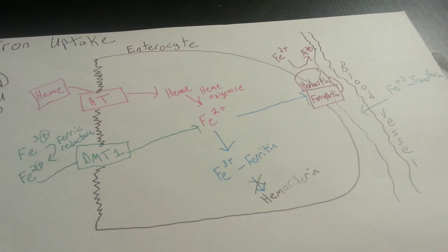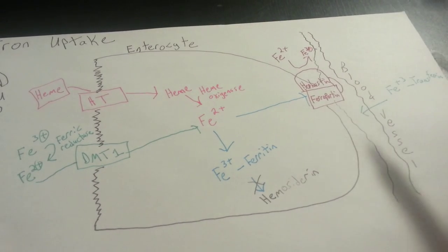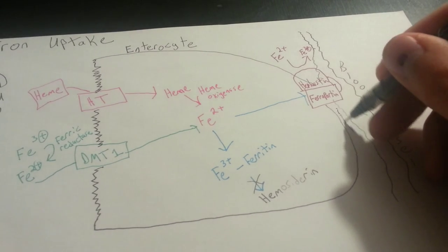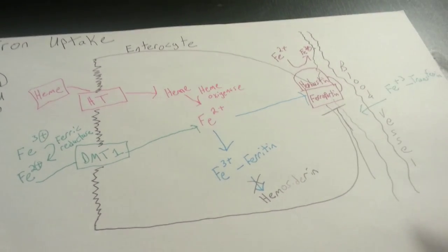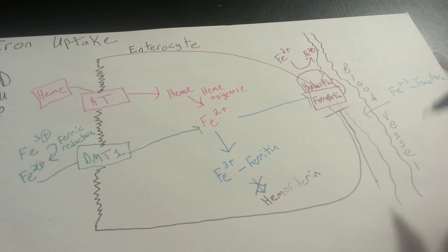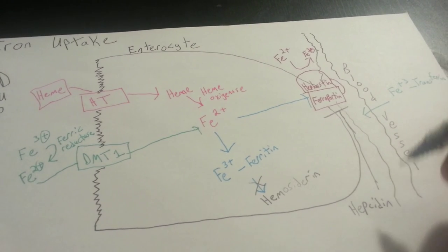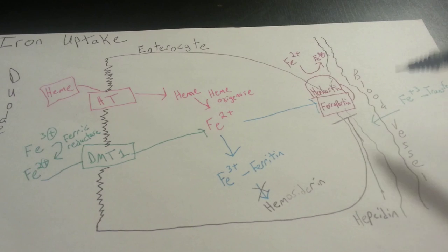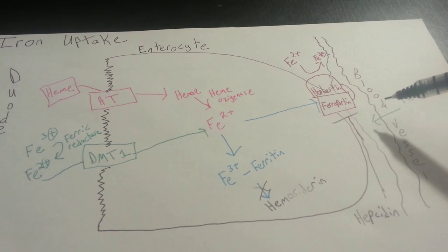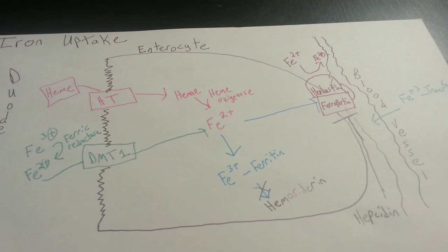And it's also important to note that we have some amount of control, not just over the storage into ferritin to keep it from going into the blood vessel, but the liver also produces an inhibiting agent which acts on ferroportin, and that's called hepcidin. And hepcidin is made by the liver specifically to block it from being taken into blood vessels so it can't go into the rest of your body. So this is the whole setup that we have here.